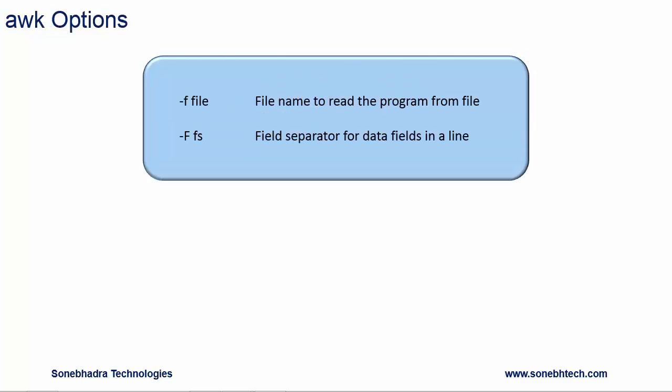Awk options. These are some awk options: hyphen small f followed by a file name, to read the program from a file; and hyphen capital F followed by fs, which specifies the field separator for data fields in a line.